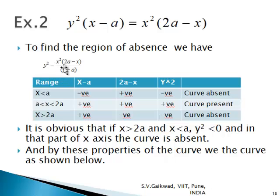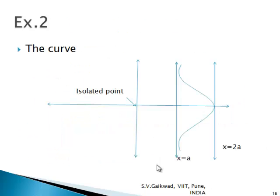For region of absence: y² = x²(2a − x)/(x − a). The sign of y² changes at x = a and x = 2a, dividing the x-axis into three parts: x < a, a < x < 2a, and x > 2a. From the sign table, y² is positive only between a and 2a, so the curve is present only in that interval. The curve shows (2a, 0) as a point with tangent parallel to the y-axis, x = a as an asymptote, and the origin as an isolated point.